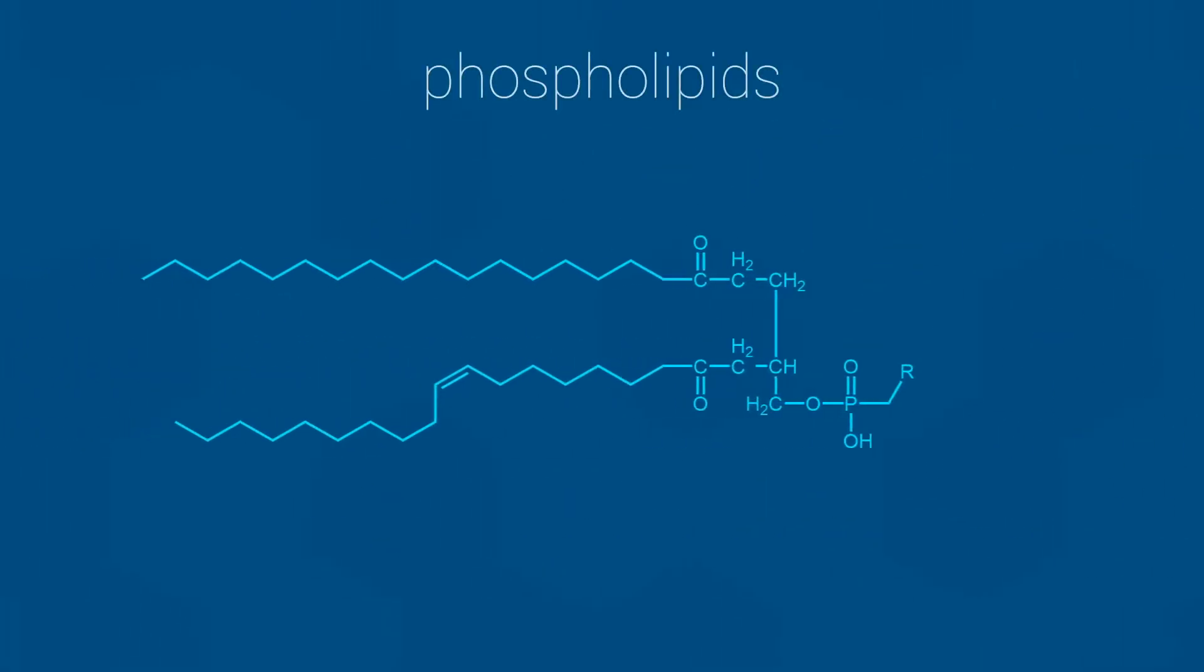But enough waxing poetic. Let's move on. The primary subunit of a cell membrane is a type of lipid that we call a phospholipid. The general structure is shown here, and it comprises two important regions.